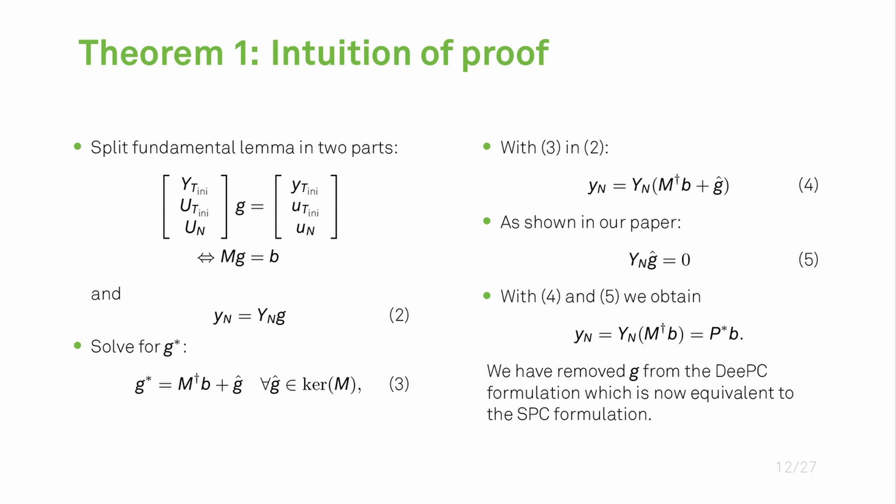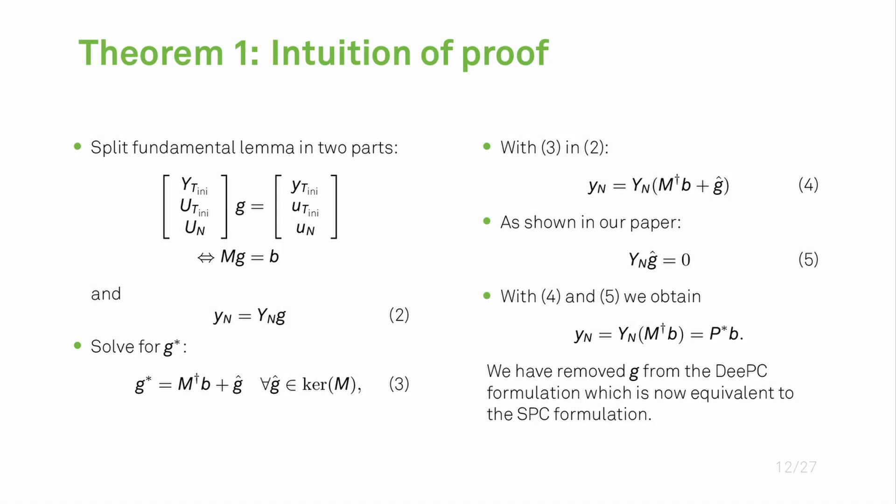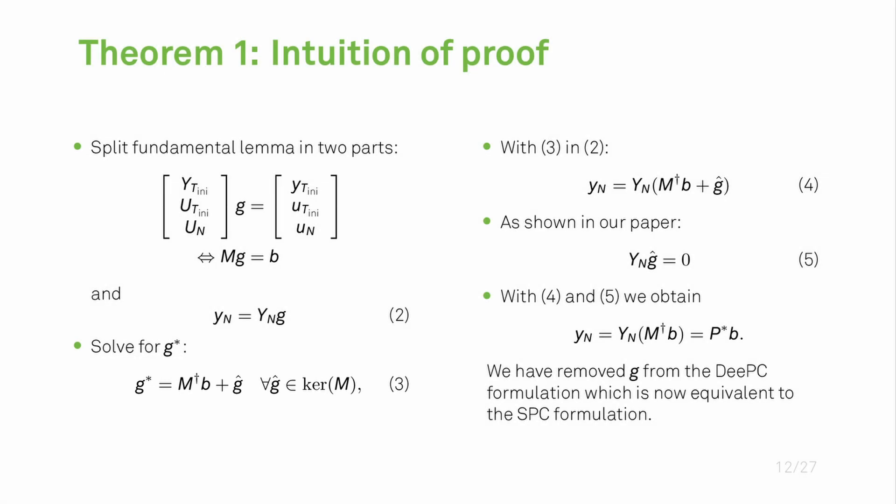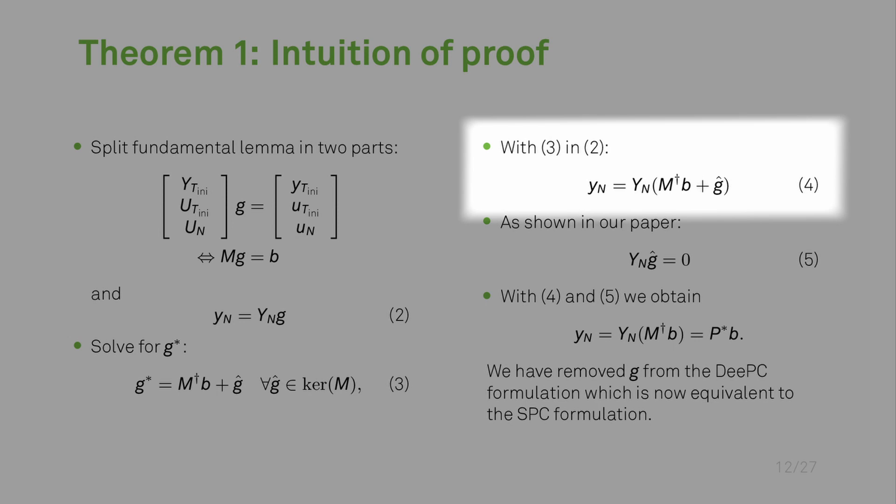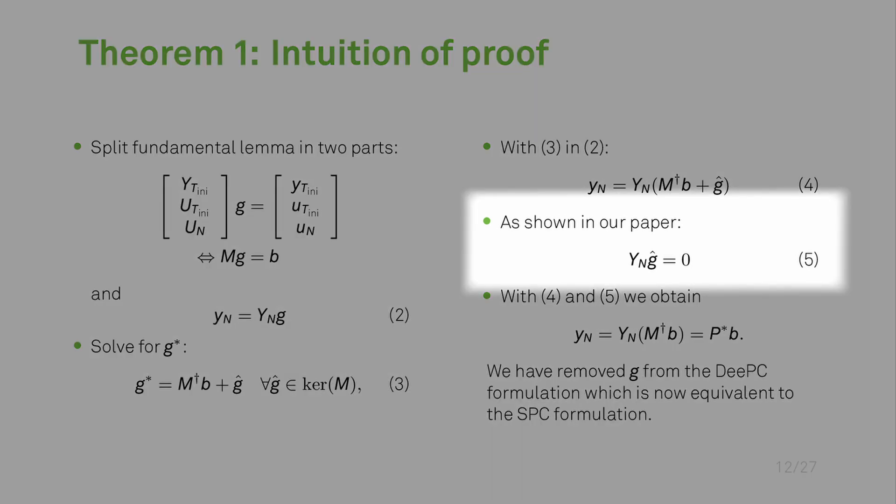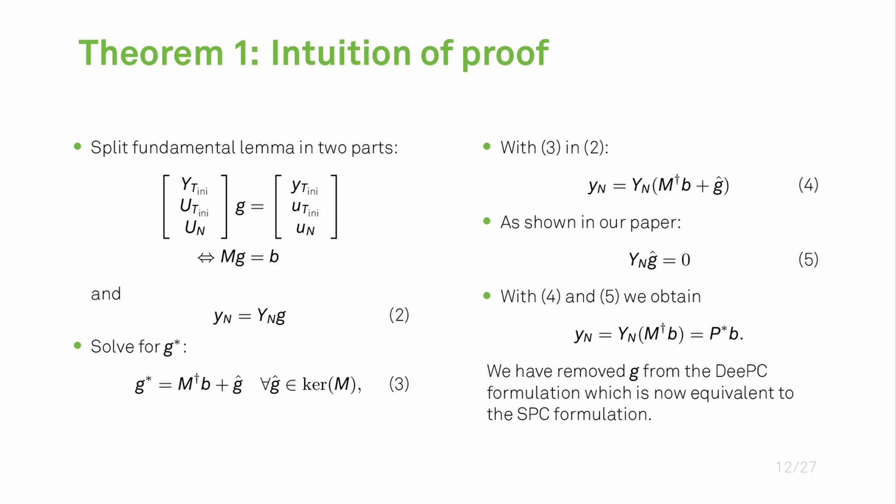I also want to give a very short intuition of the proof which is shown on the slide. Essentially what we are doing is taking the DeePC constraint, so the fundamental lemma, and split it into two parts. From the two parts we are then able to solve the first part for G by applying the pseudo inverse of this matrix M. If we then plug in G star into expression 2, we obtain expression 4 here. We are able to show in the paper that Y_N g equals zero, so we obtain this last expression which is exactly the constraint given in the SPC problem. We have eliminated the DeePC constraint and ended up with the SPC formulation.